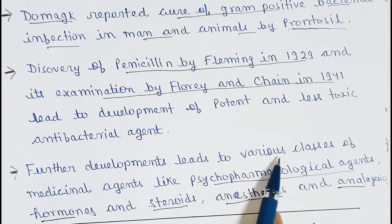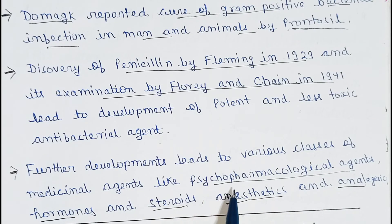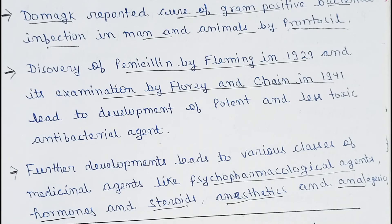Further development led to the creation of various classes of medicinal agents like psychopharmacological agents, hormones, steroids, anesthetics, and analgesics. धीरे-धीरे medicinal chemistry की development के साथ ये medicinal agents बनते गए — psychopharmacological agents जो psychotic में use होते हैं, hormones, steroids, anesthetic medicines, और analgesics। इस तरह से medicinal chemistry का development हुआ — from drug of antiquity to the 20th century।